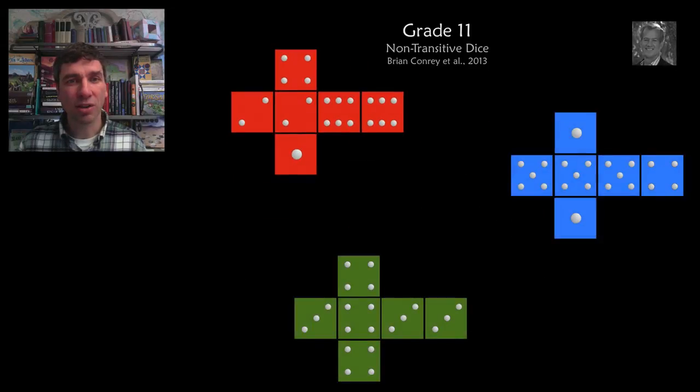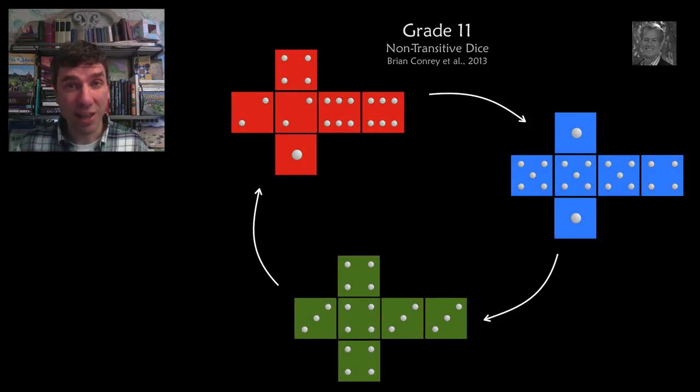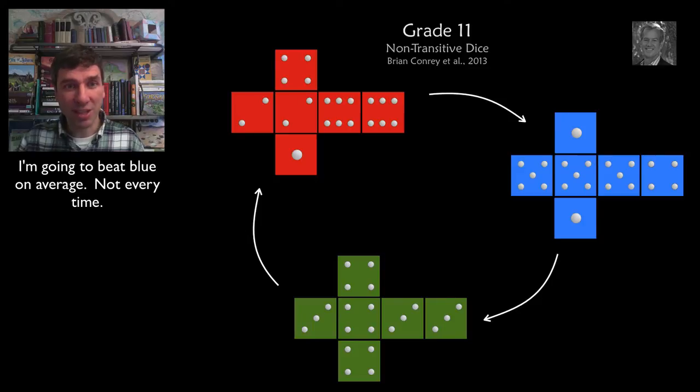that you're going to get something called non-transitivity? Non-transitivity means that, in this case, if you play a game, so I'm the red dice and I roll, and I play against a blue player and they roll their dice, and we see who's got the higher roll, that I'm going to beat blue with this dice, red's going to beat blue, blue's going to beat green,